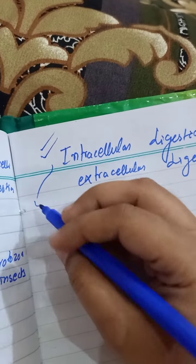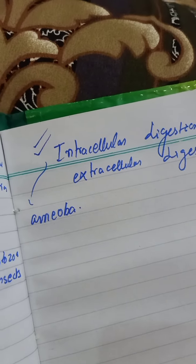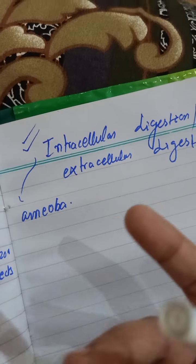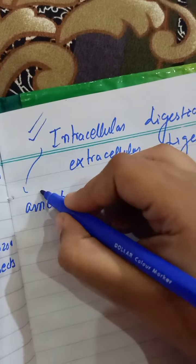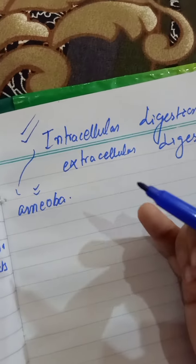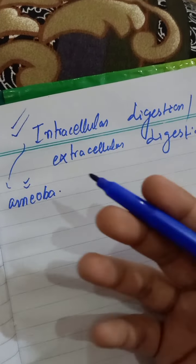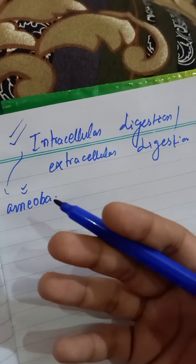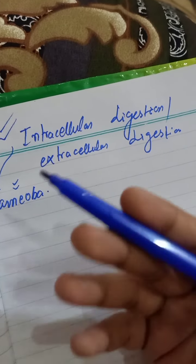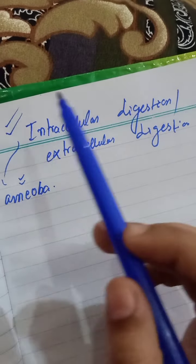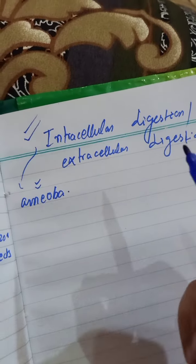I gave you the example in the last video — that was amoeba. In amoeba, all the steps were done: ingestion, digestion, absorption, assimilation, as well as egestion. All those processes were happening in the amoeba, inside the cell, through the lysosome enzyme fusing with the food vacuole, churning the food, which was then absorbed into the cytoplasm. The waste product was excreted out through the cell membrane, which got ruptured to release it.